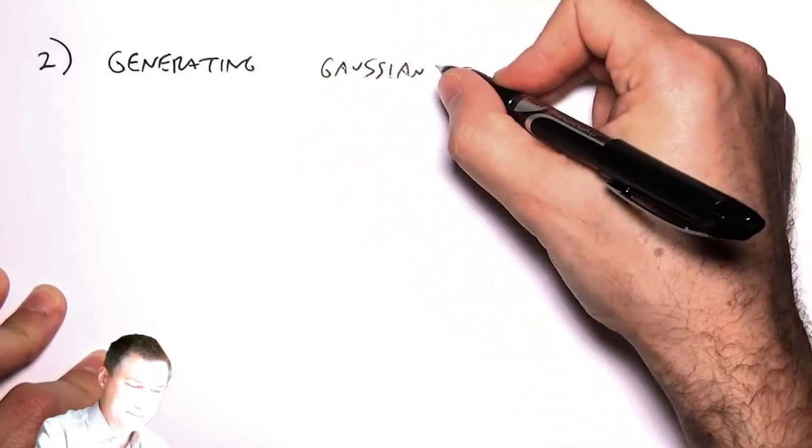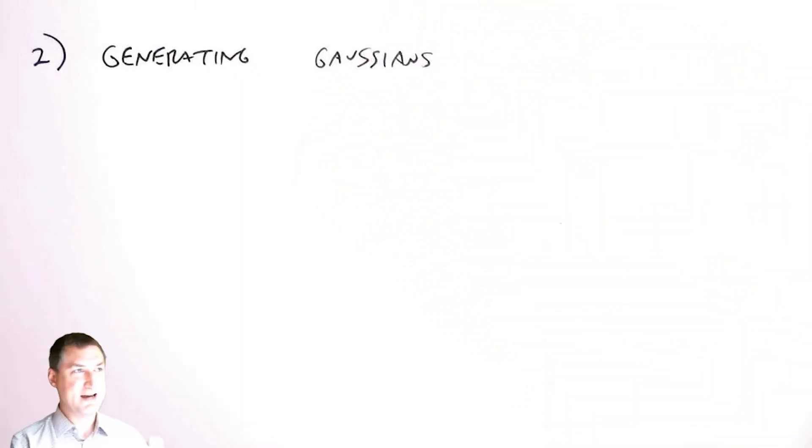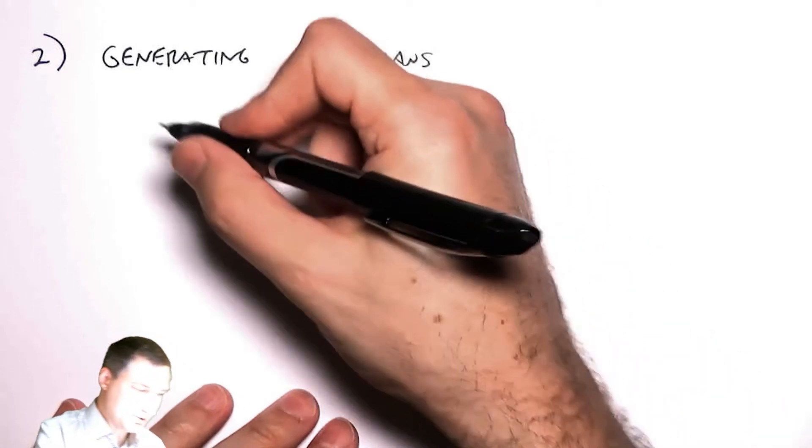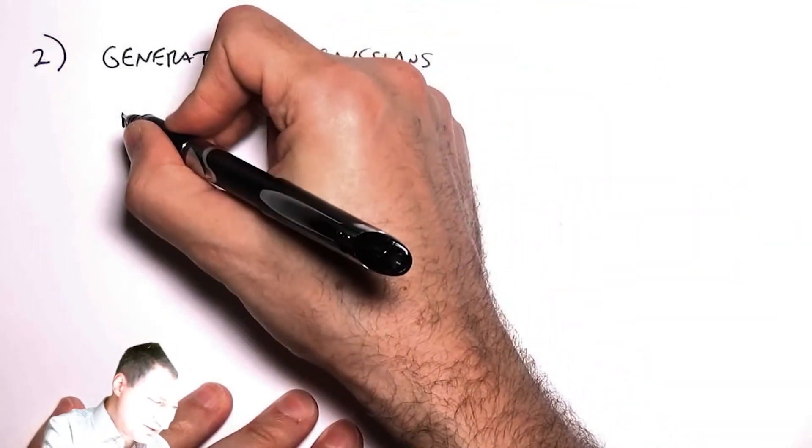You'll notice that MATLAB and Python have an extra random generator that generates a Gaussian random variable that basically has zero mean and unit variance. What's going on under the hood of that? So here's one method for doing that.